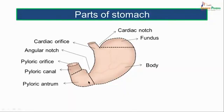The pylorus measures about 10 centimeters in length. It has an upper dilated part called the pyloric antrum, measuring about 7.5 centimeters, and a distal narrow tubular structure called the pyloric canal, measuring 2.5 centimeters in length, which leads to the pyloric orifice.